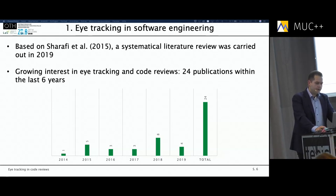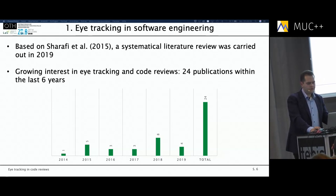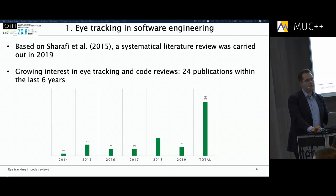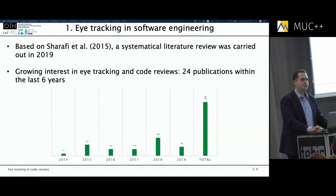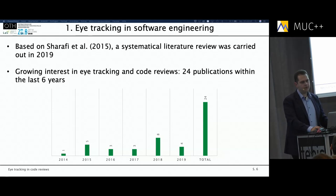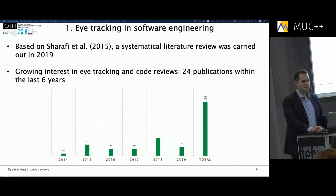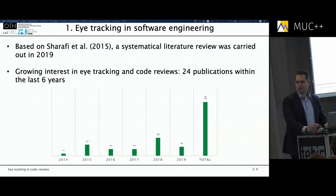Based on the findings of Sharafi et al., I did my own systematic literature review for my PhD thesis, and in the time from 2014 to 2019 we already have 24 publications focused on code reviews and eye tracking. So from 1999 to 2014 there were only 20 publications, and within the last 6 years we already have 24. Eye tracking technology has also become more available, more accessible, and more precise — modern eye trackers are easy to operate, like the one we have set up here on your left hand side.